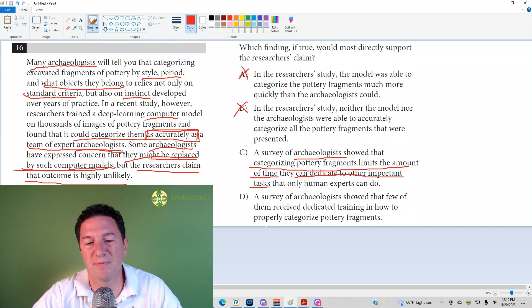Answer choice D. A survey of archaeologists shows that a few of them received dedicated training on how to properly categorize pottery fragments. Well, regardless, whether they did or whether they didn't, it does say that they're expert archaeologists, so they do become expert archaeologists. So it's either not taking into consideration those who did not have training, or those who did not have training eventually become experts just from being on the job for so long. C is your best answer here.